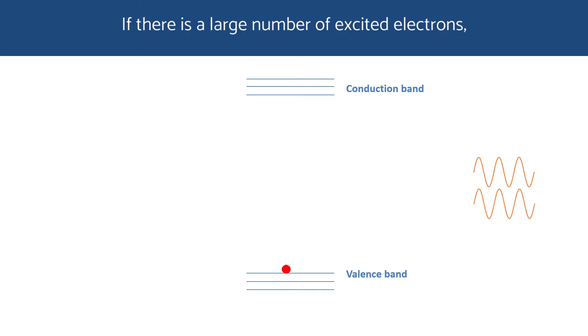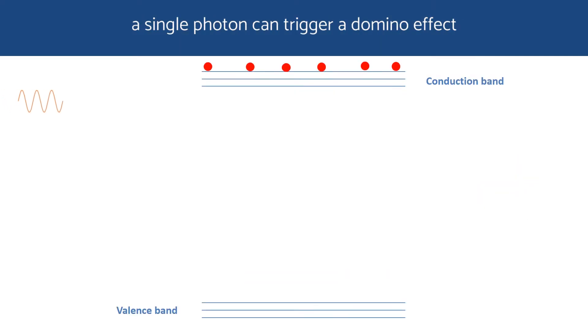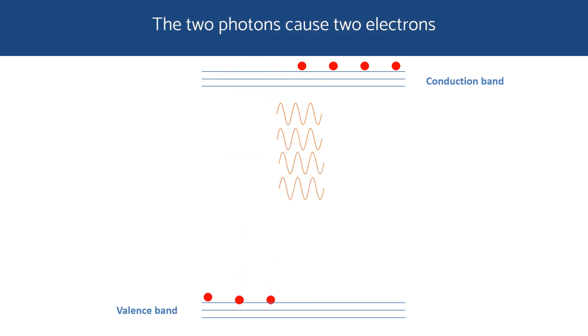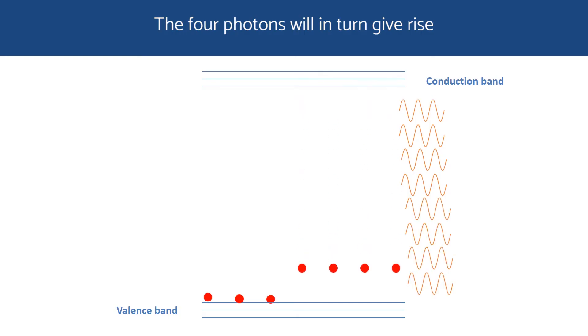If there is a large number of excited electrons, a single photon can trigger a domino effect of stimulated photon emission as follows. The first photon causes an electron to fall to the valence band, generating another photon in the process, so that we end up with two photons. The two photons cause two electrons to drop to the valence band, generating additional two photons, resulting in a total of four. The four photons, in turn, give rise to eight photons, and so on. This represents the amplification process.